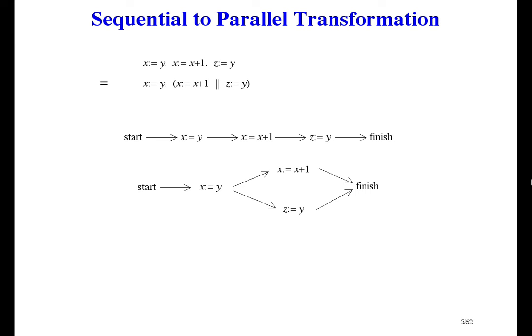In particular, the first assignment is followed immediately by z gets y. So we have those two assignments in sequence, and they can be in parallel. The point is that if you have two things in sequence that can be made parallel, when you put them in parallel, you might enable further changes from sequential to parallel execution.